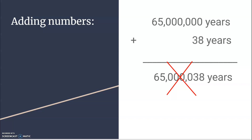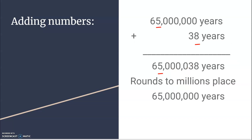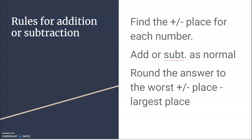If the dinosaur was 65 million years when the guard started and he worked 38 years, the answer is not that the dinosaur is 65 million and 38 years old, because the 65 million was an estimated number. It had a plus or minus — possibly plus or minus in the millions place. So if it's 65 million plus or minus a million years, adding 38 years is insignificant. We are going to round that to the millionth place.